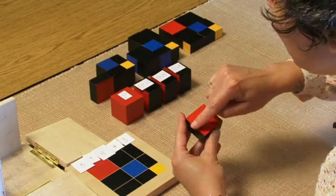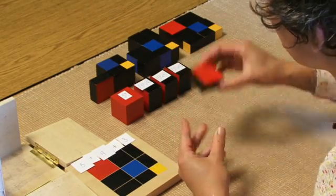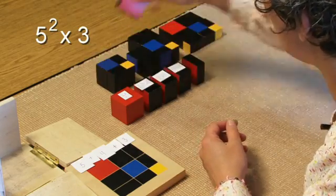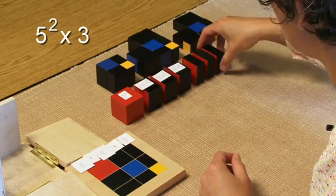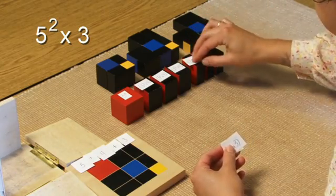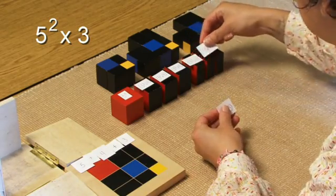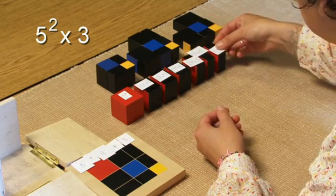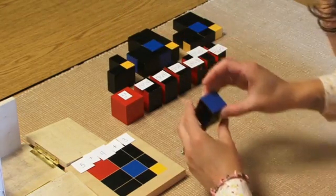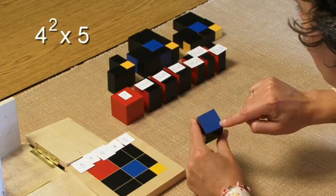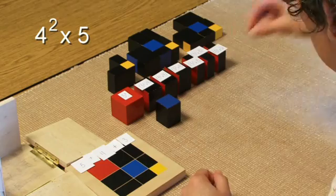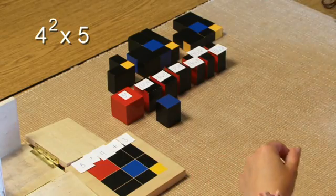Then we have our 5 squared times the height of c, which is 3 now. And we have our 4 squared times 5, and we have three of those.